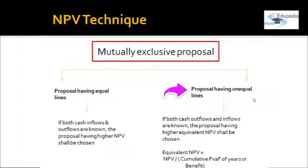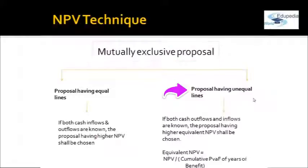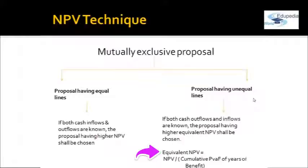If you have two proposals, whichever gives a higher net present value — that is, where the present value of cash inflows exceeds the present value of cash outflows — that will be chosen. If the projects have unequal lives, you have to compute an equivalent NPV, because the two projects are not directly comparable.